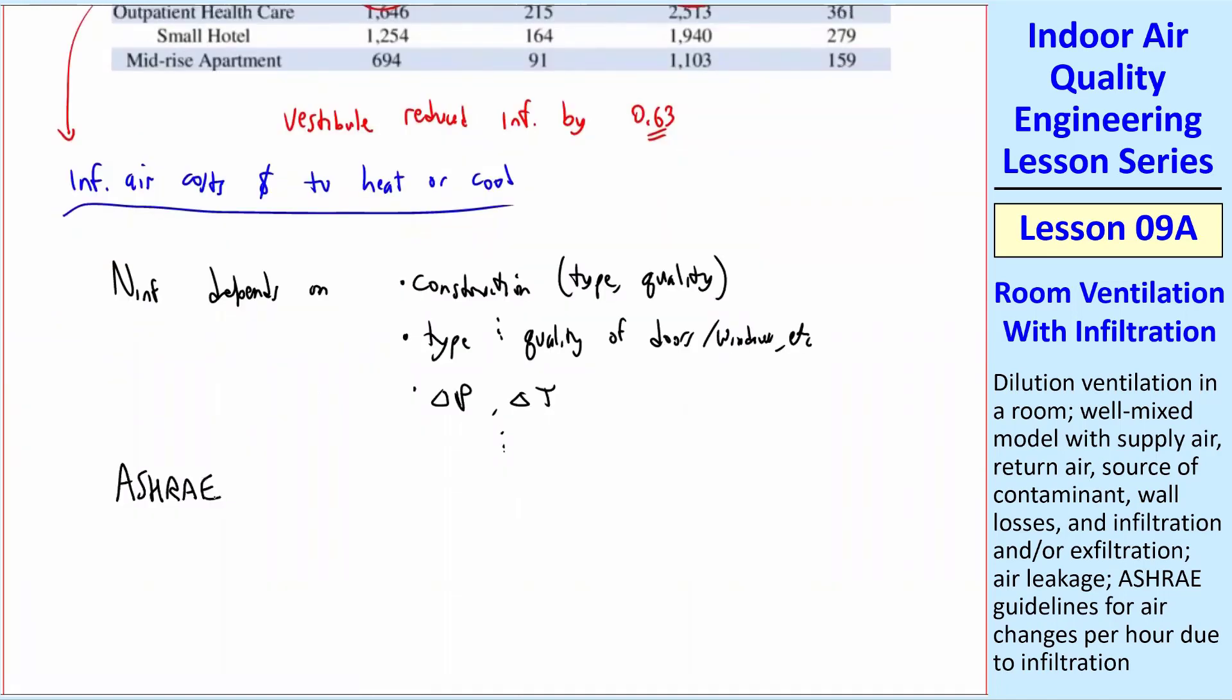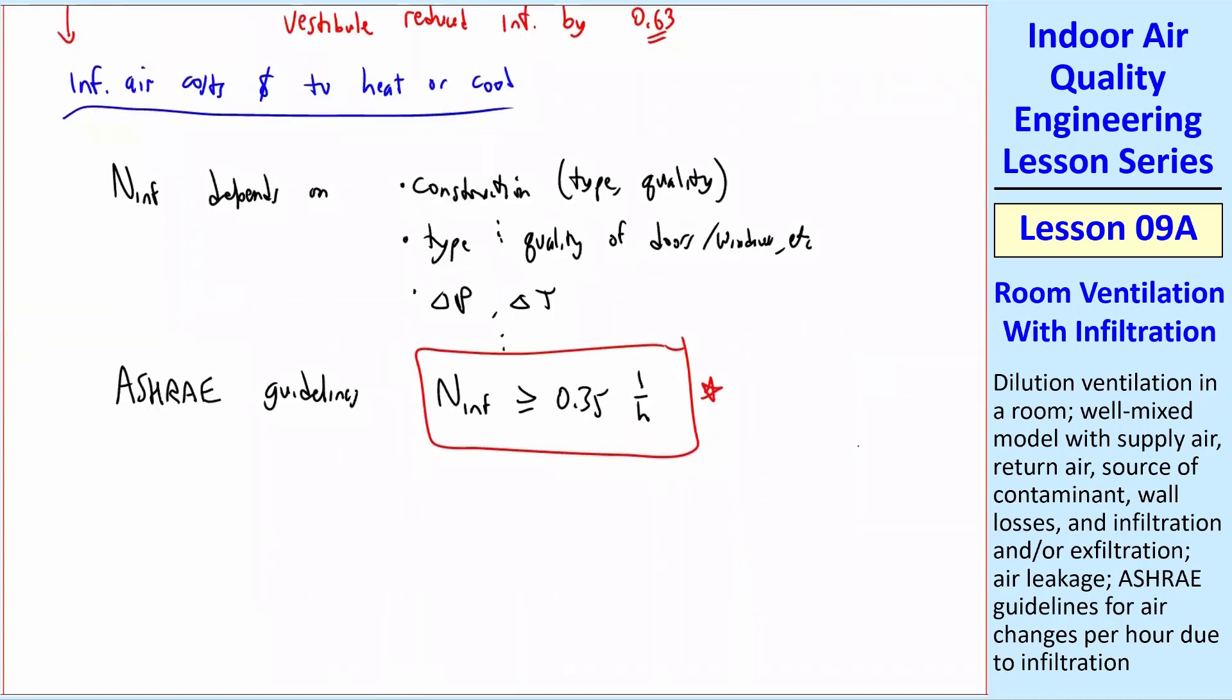ASHRAE, American Society of Heating, Refrigeration, and Air Conditioning Engineers, they have guidelines for buildings, and that is that N infiltration must be greater than or equal to 0.35 per hour. You need to have about a third of the room change per hour. Otherwise, if it's not that, you would have unhealthy air. There's too many people breathing. What ASHRAE says is that if the natural infiltration is less than 0.35 per hour, then you require forced ventilation.